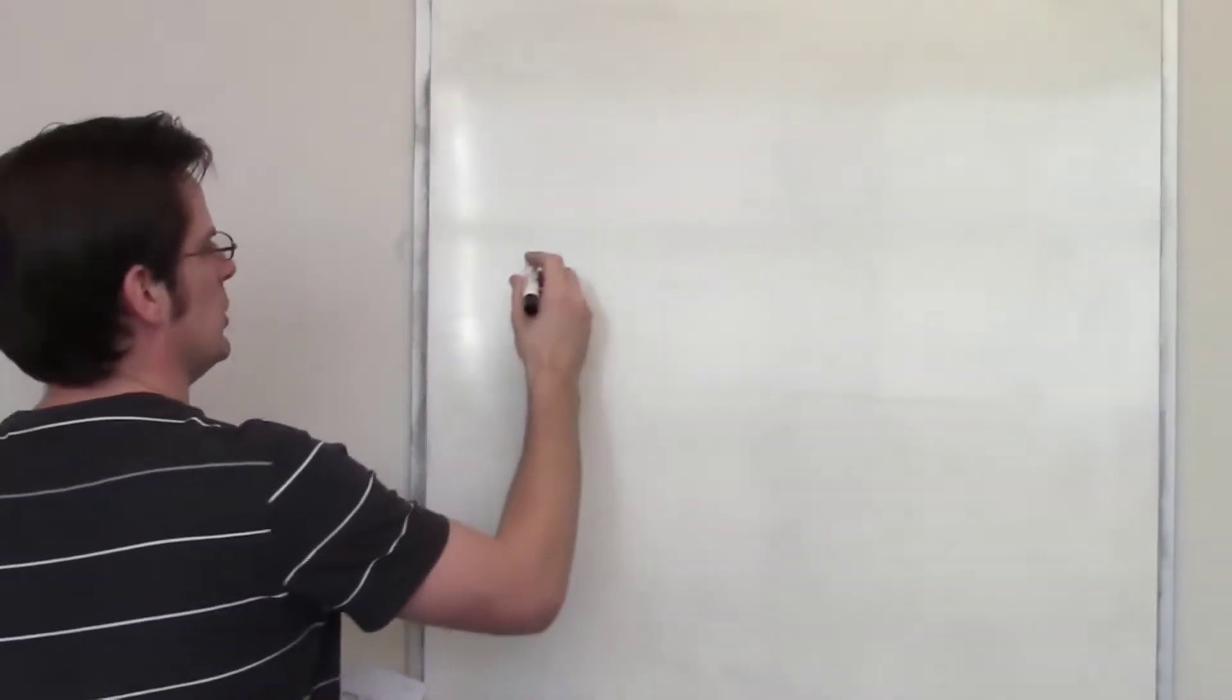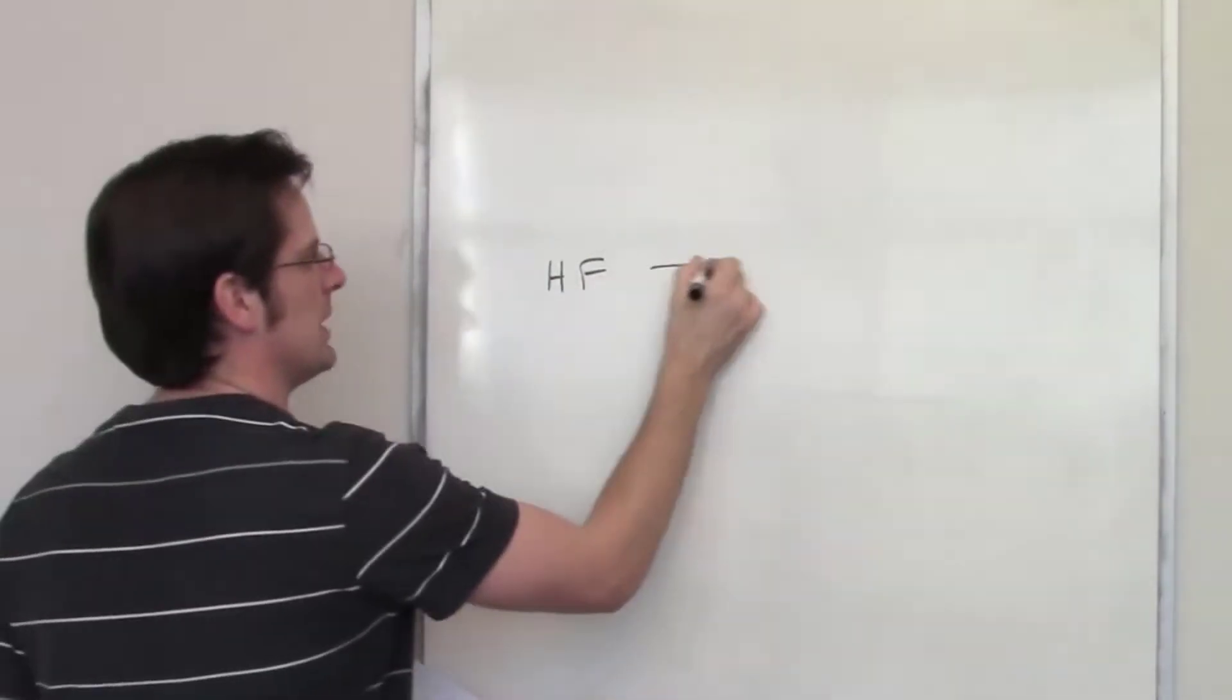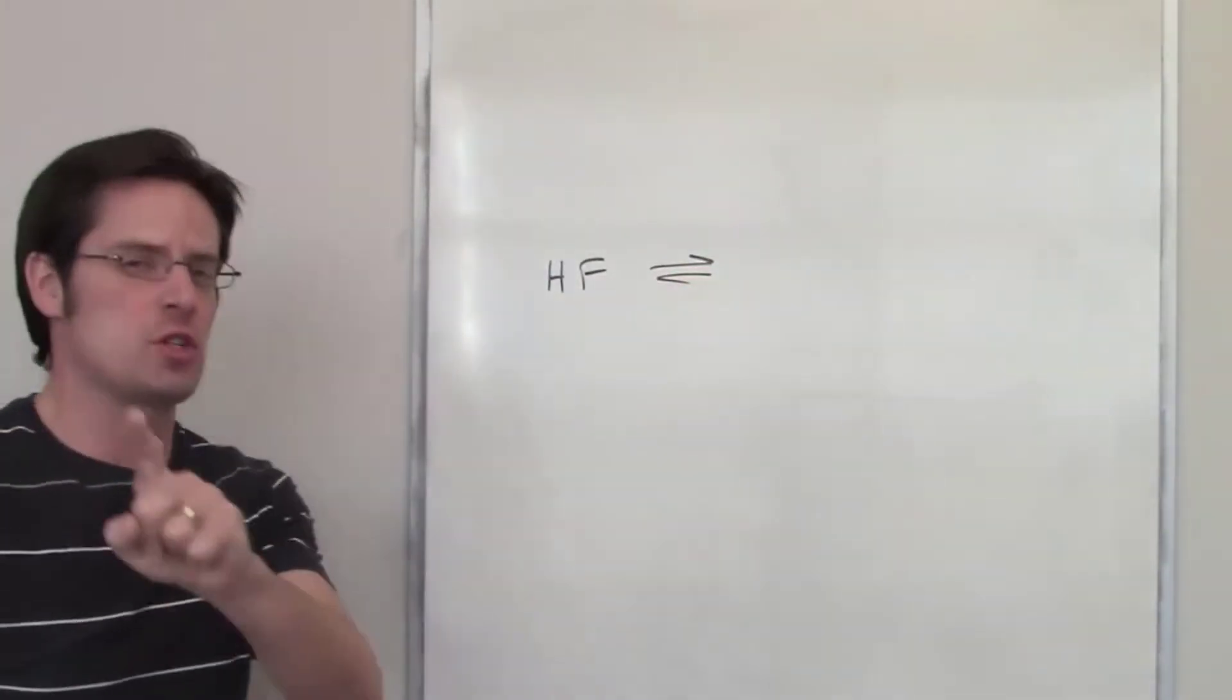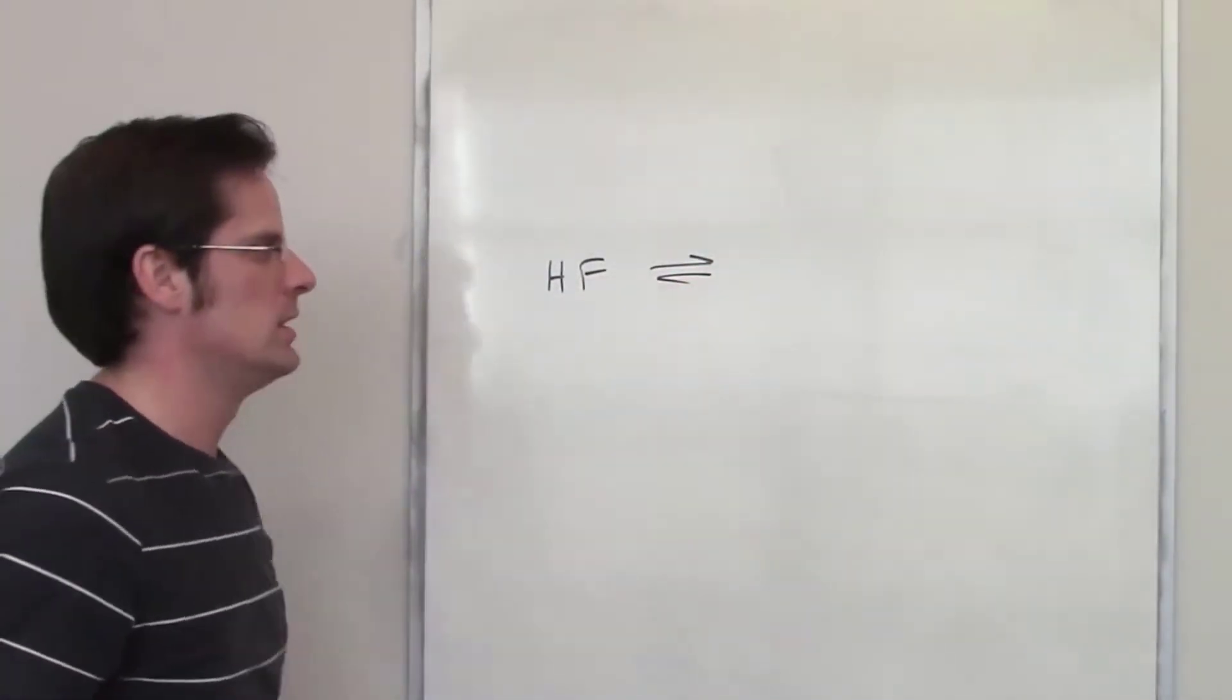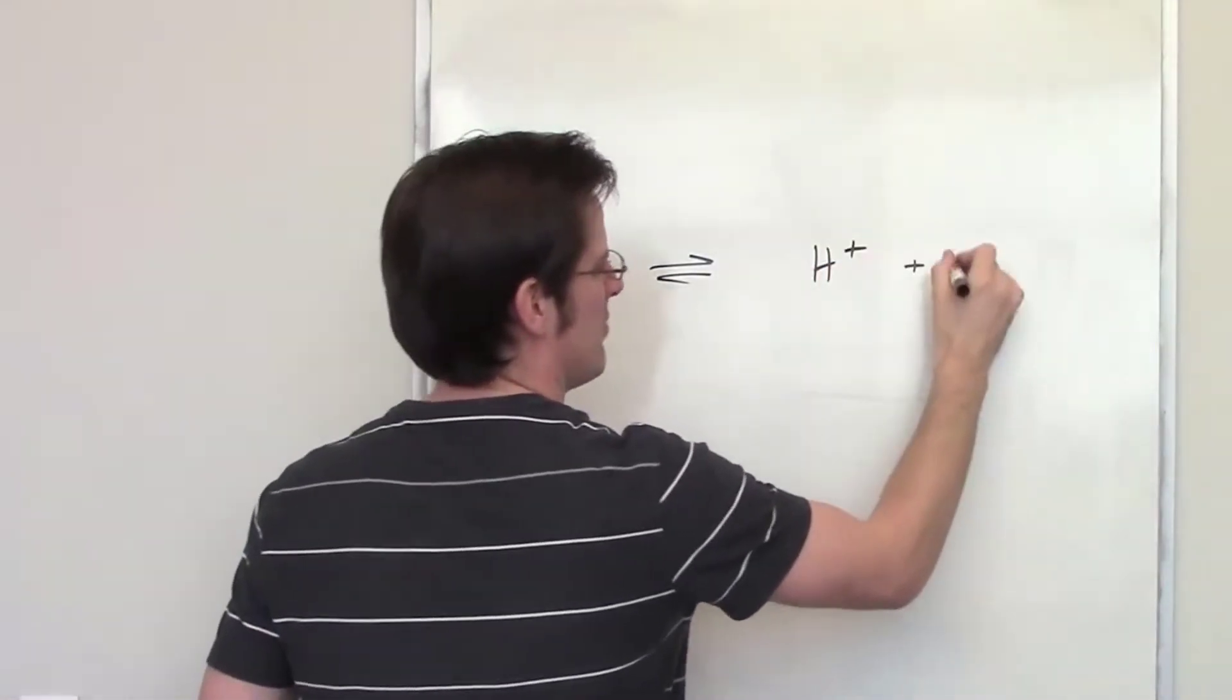This question tells me that I've got a solution of HF. HF is a weak acid, so I'll put little equilibrium arrows. For strong acids, I put a one-way arrow. But this is a weak acid, so I've got HF. It's going to dissociate to give H plus and F minus.